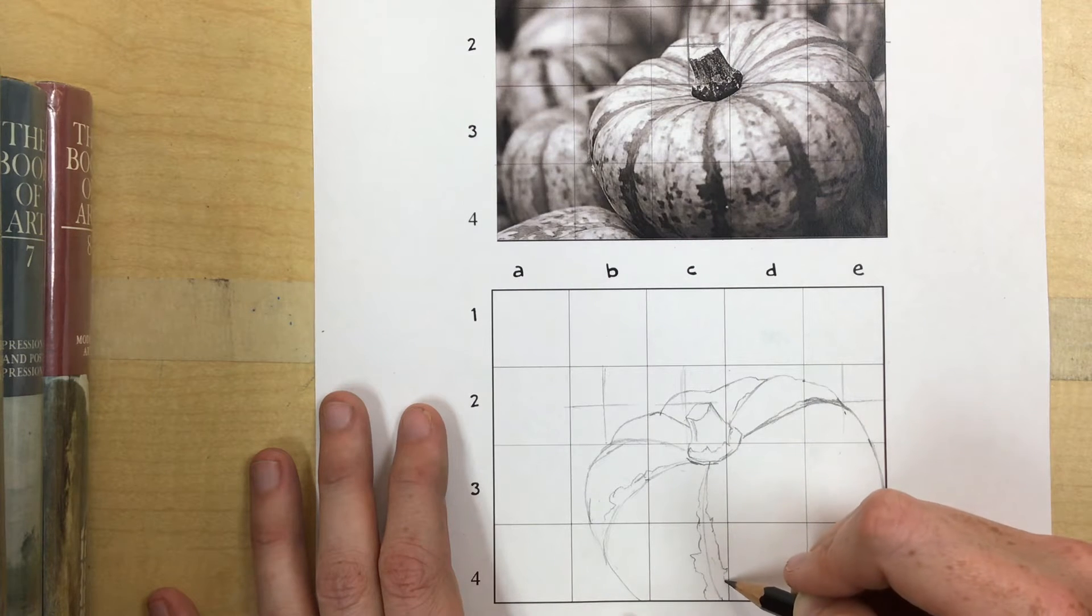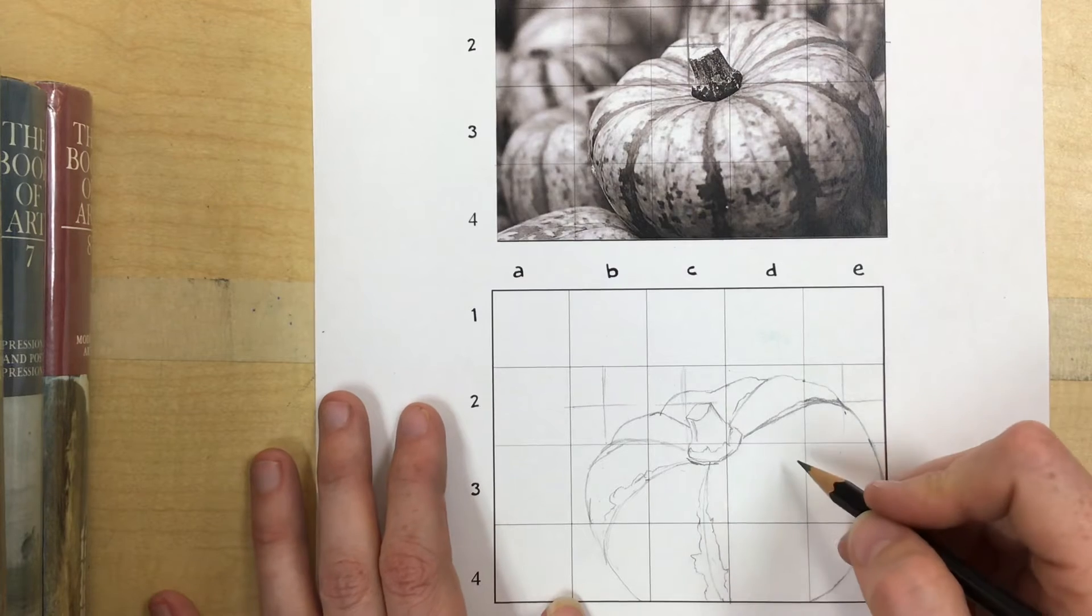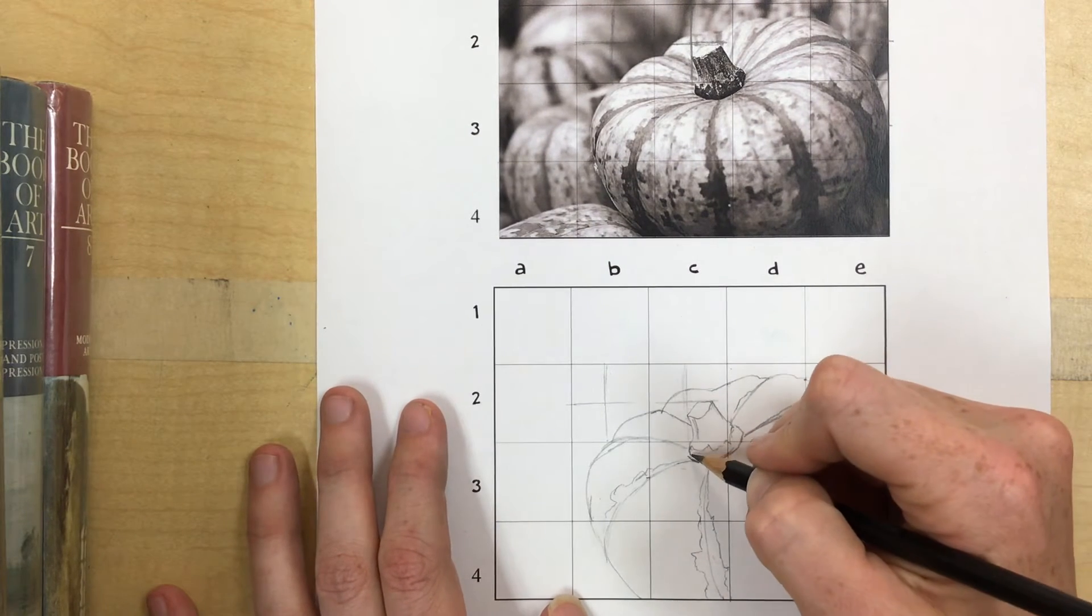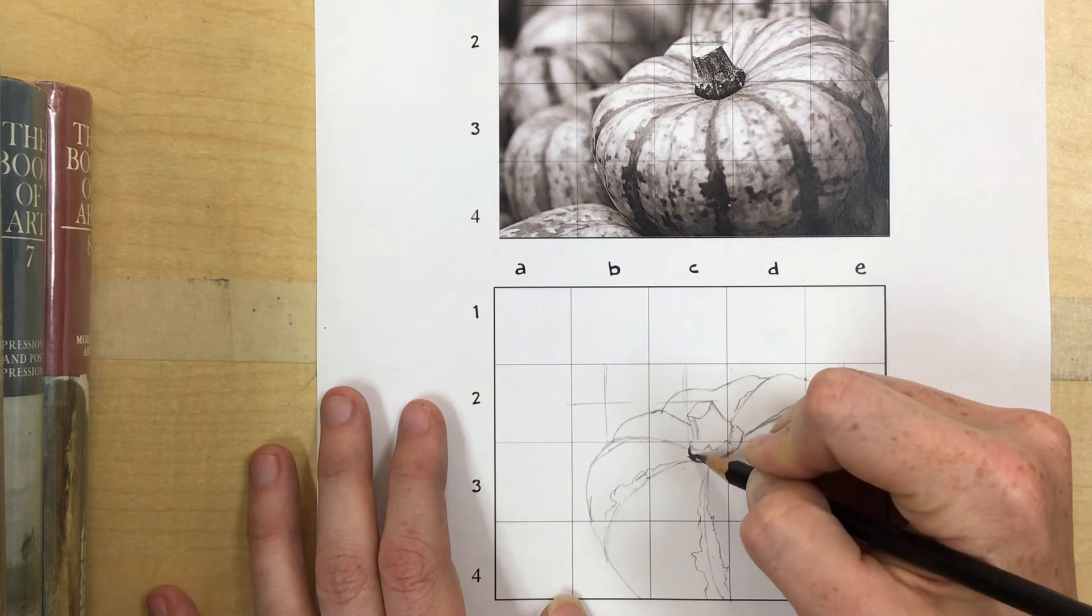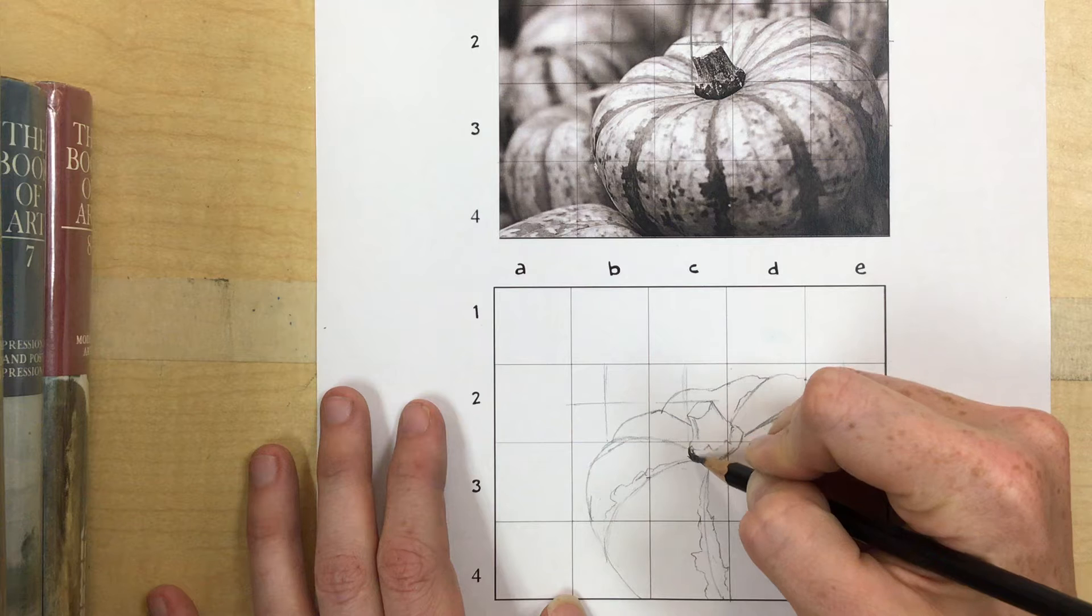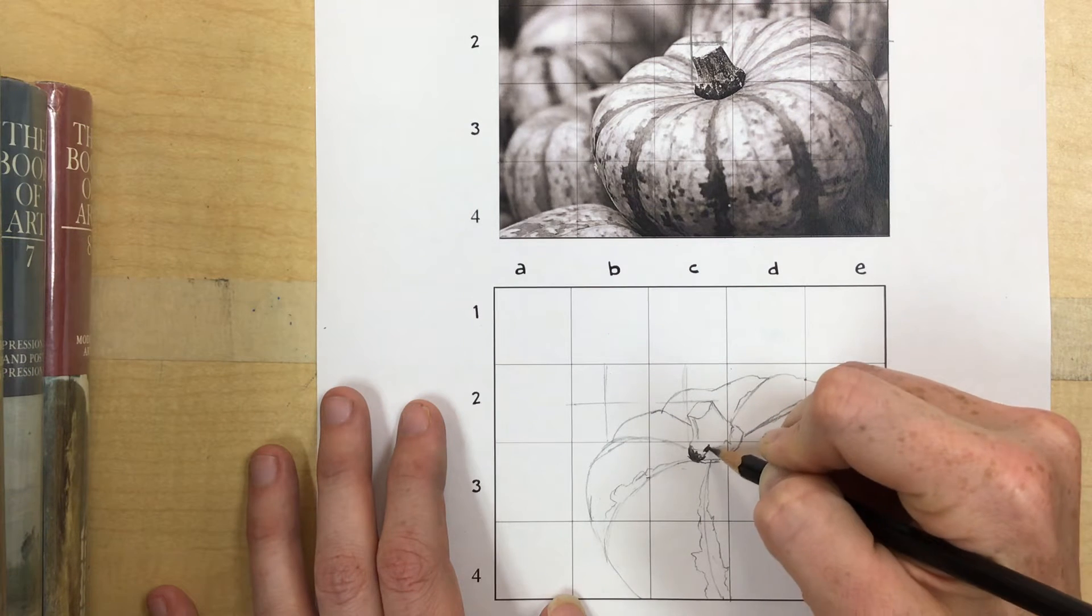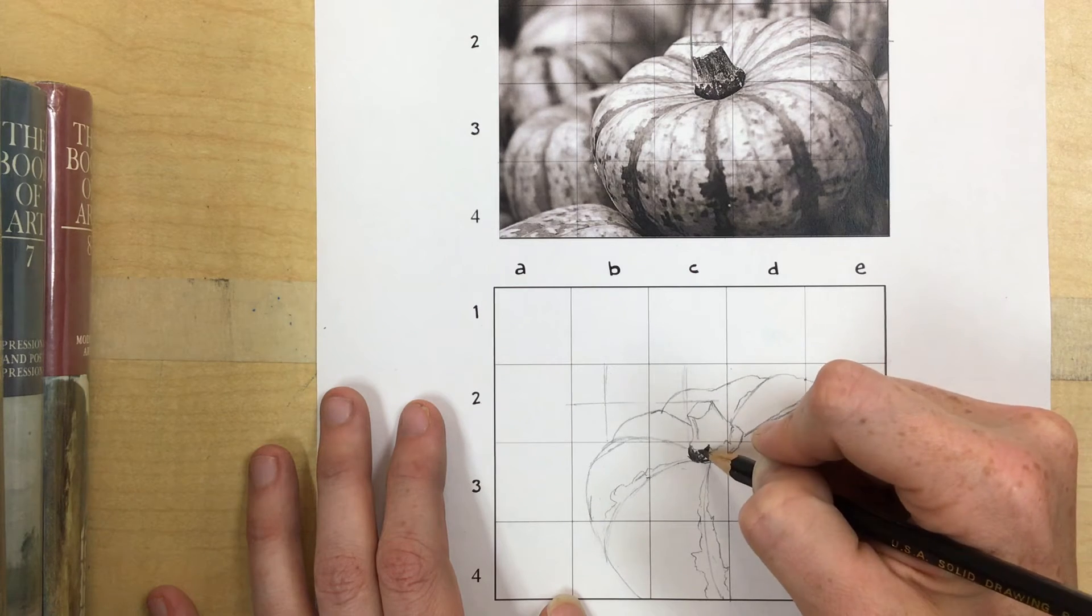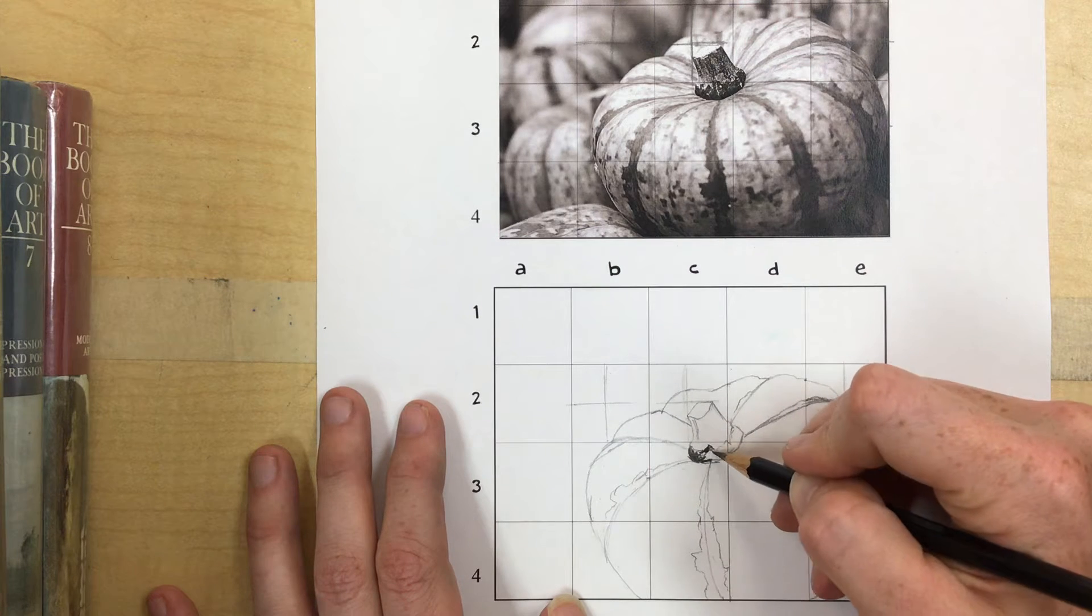So after you have all of your big shapes drawn out, then you would go back and practice your rendering a bit. So I see this is pretty darn dark right here. I just have a 2B pencil, but I could certainly switch if I wanted to. So it's almost solid black, so I'm starting to do that and I'm leaving some of the little white spots that I see up here, so I'm just letting the white paper show through on those.